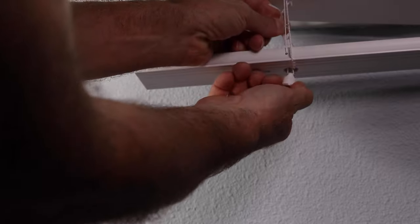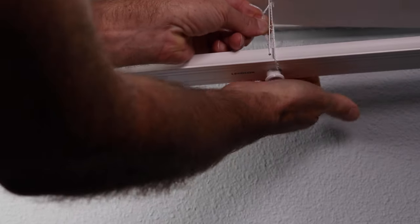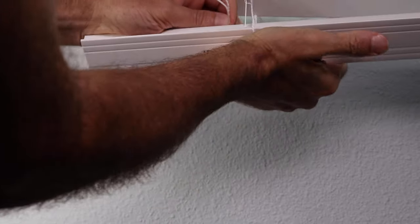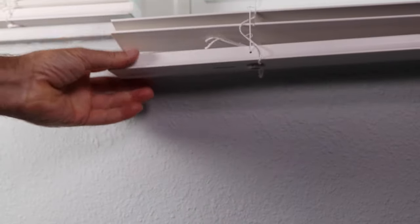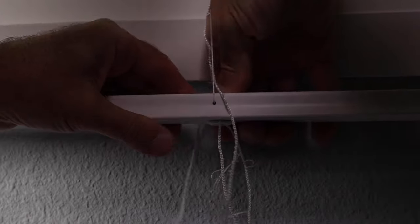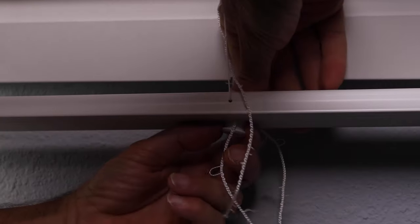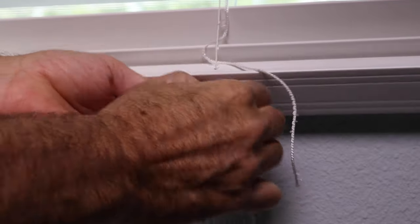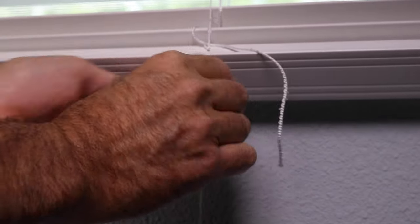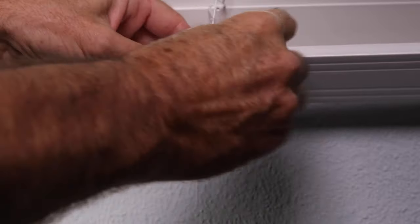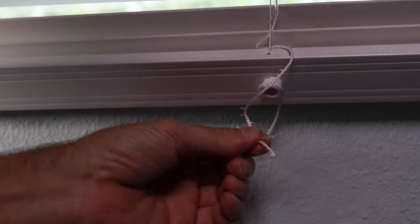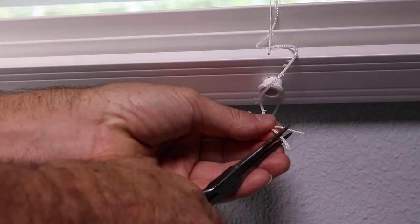All right, so pull it up about where you want it and then just put the button back. All right. All right, so once again, we're going to use our thumb. Push that out of there. Pull that button back. Let the strings fall out. And then take your other ones. Put them like that. Grab them with your pliers.